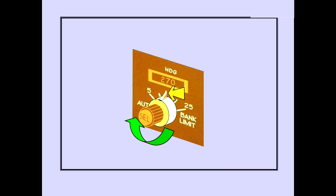Rotating the Bank Angle Limit Selector sets the maximum bank the autopilot will use in the Heading Select mode. Settings of 5, 10, 15, 20, and 25 degrees are available. A limit of 15 degrees is shown here.